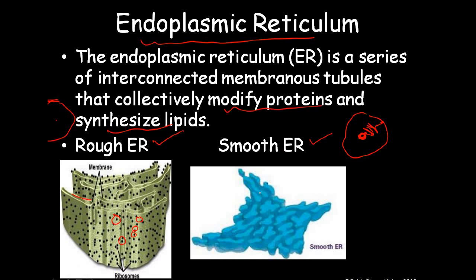The smooth endoplasmic reticulum does not have ribosomes. It synthesizes carbohydrates, lipids, and steroid hormones. It also helps in detoxification of the cell and in storage of calcium.